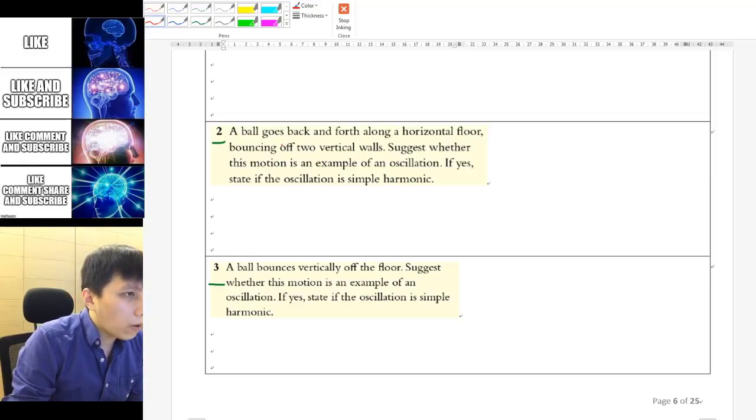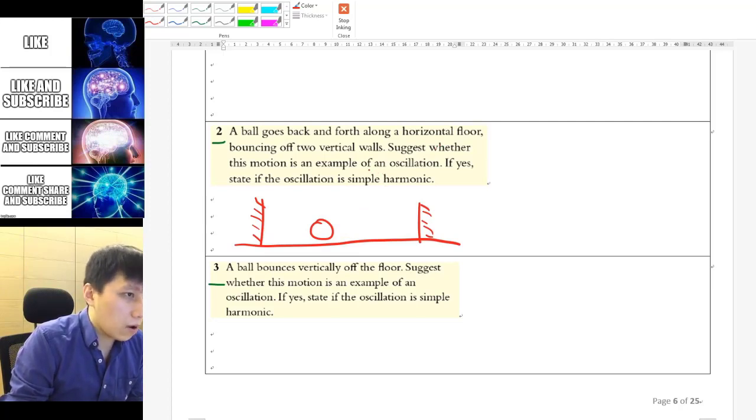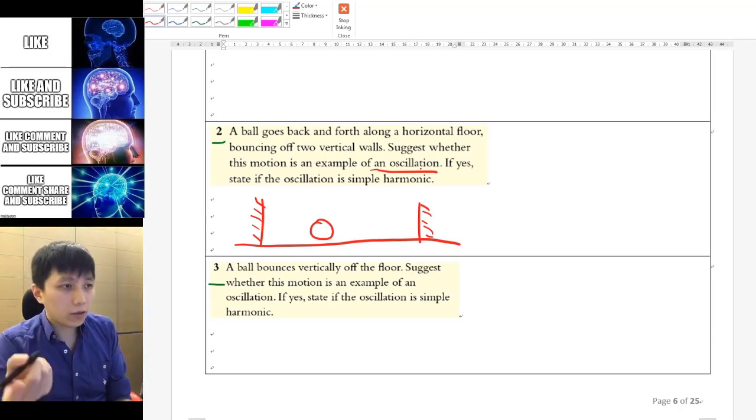Okay, question number two. It said there's a ball going back and forth along the floor bouncing off the two walls. So the picture that I can imagine is there are two walls and the ball just goes back and forth like this. So is this motion an example of oscillation? I think why not?